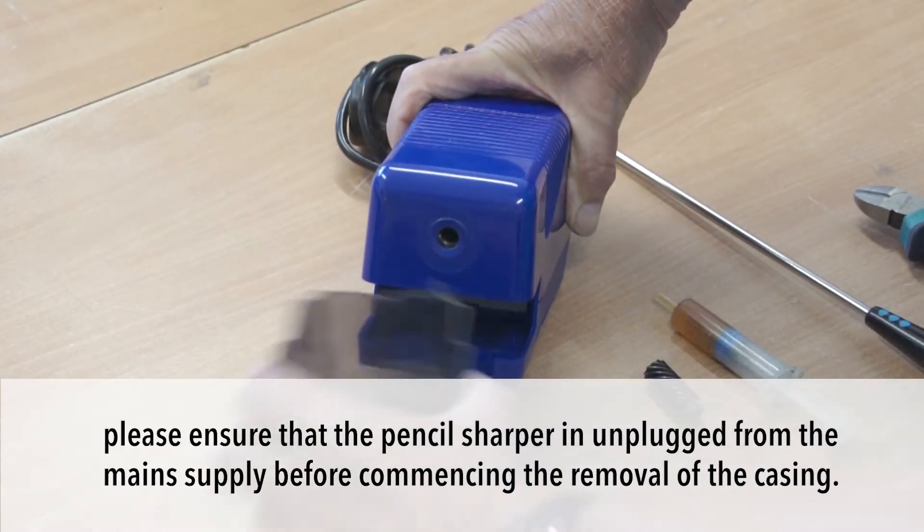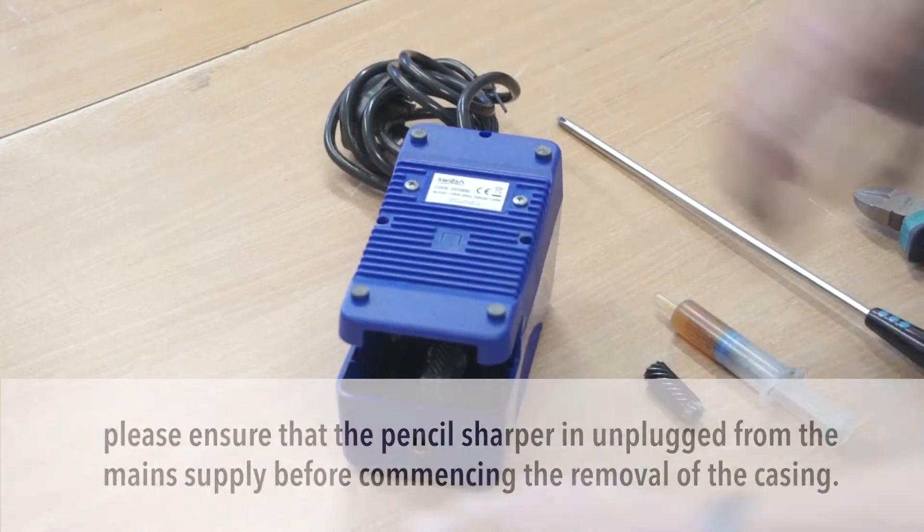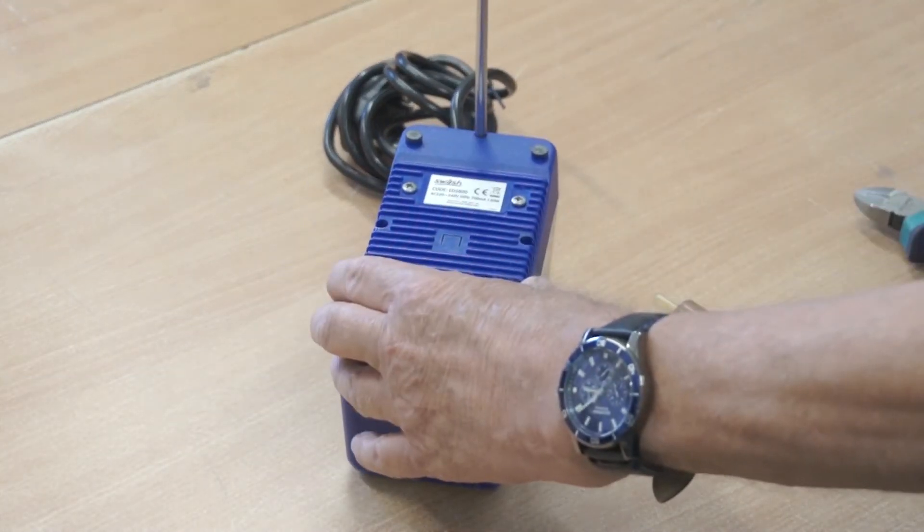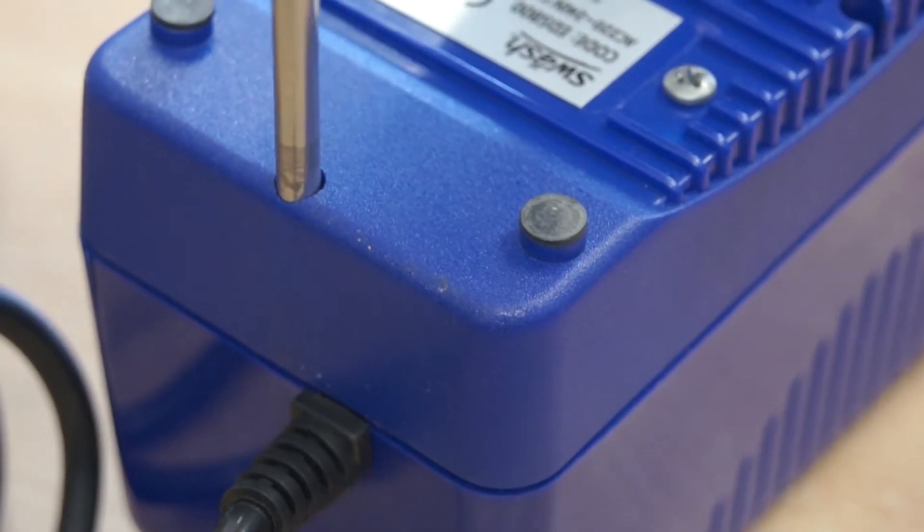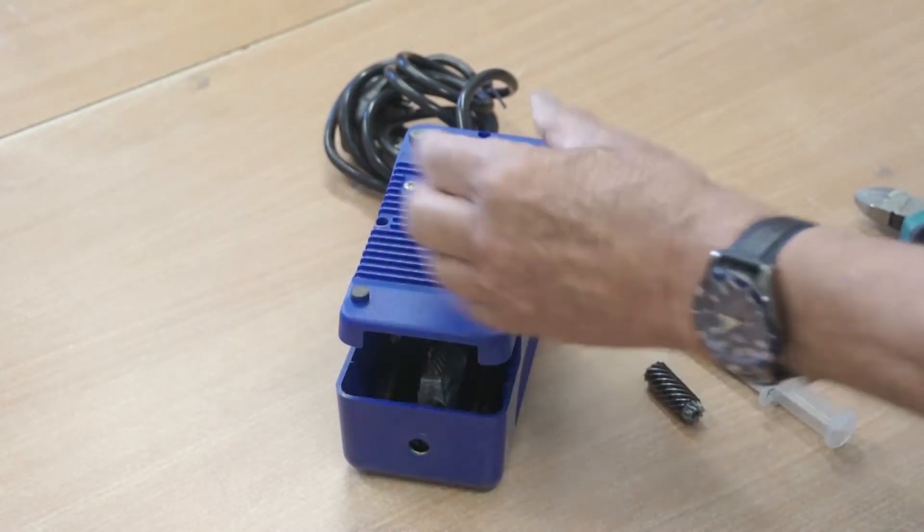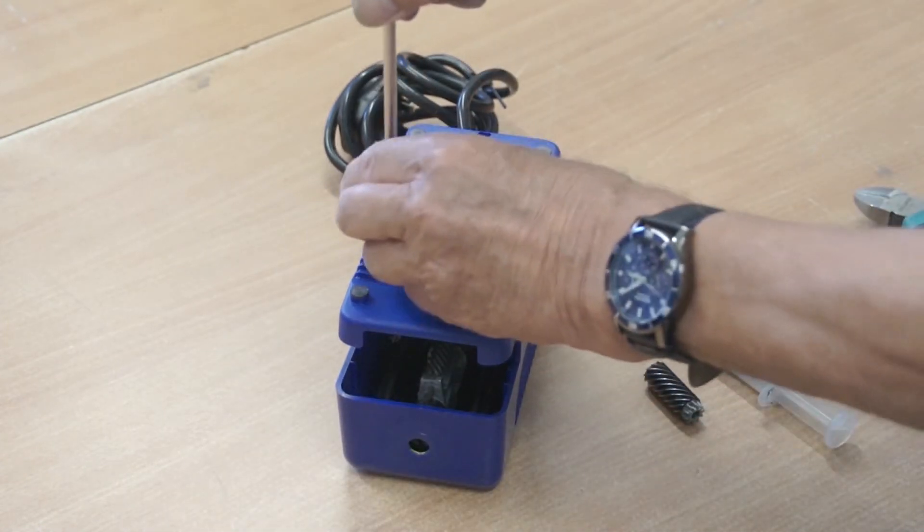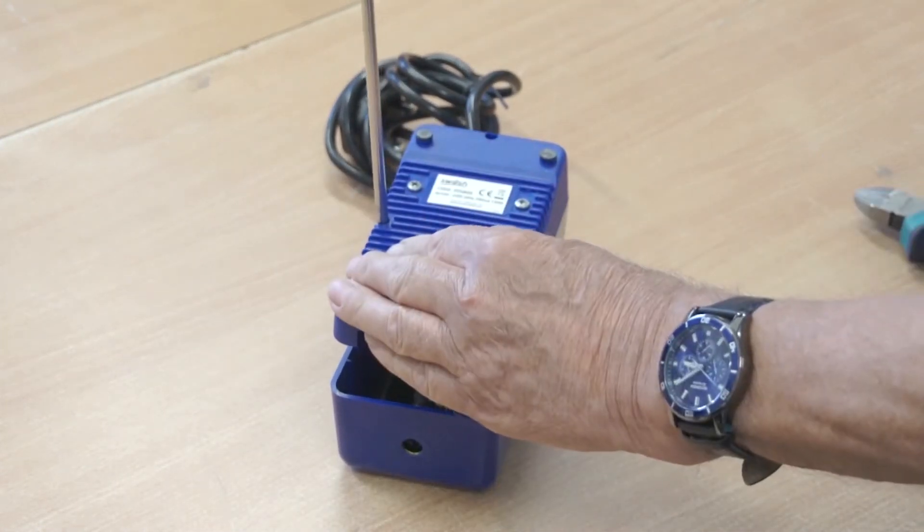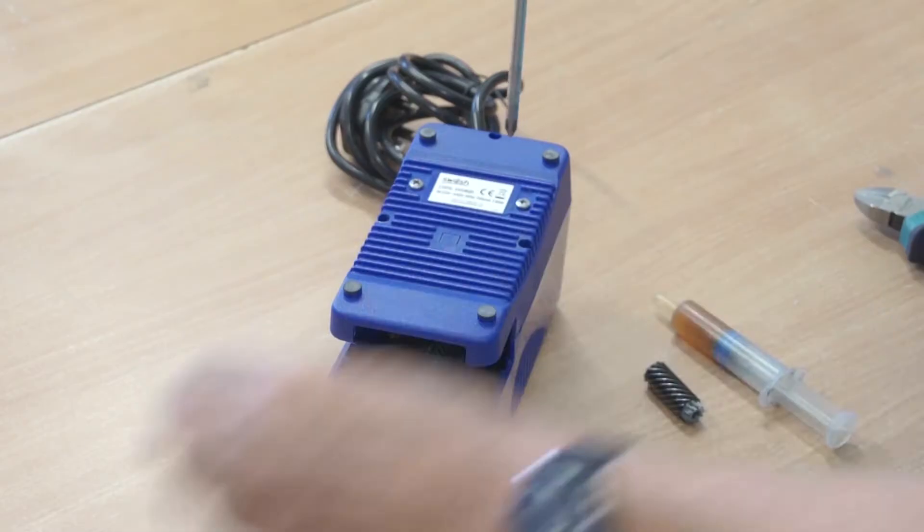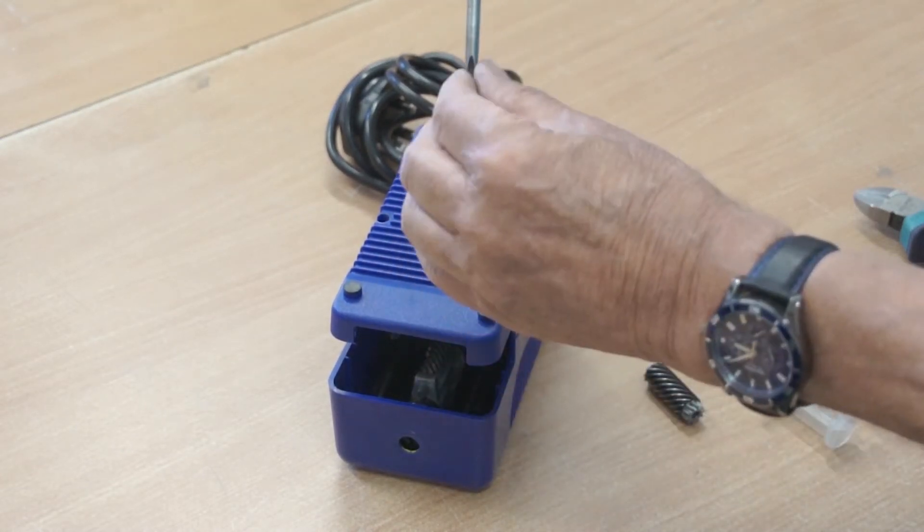To start with, remove the shavings tray and then invert the sharpener. With your Phillips screwdriver, go down to the screw, you'll feel it engage and loosen it completely. This one has withdrawn the screw because it has a magnetic tip but that is not essential as you can invert the machine and tip the screws out later. So that's the three.